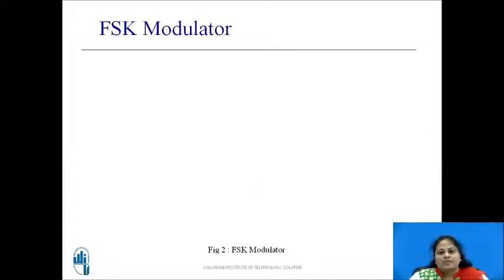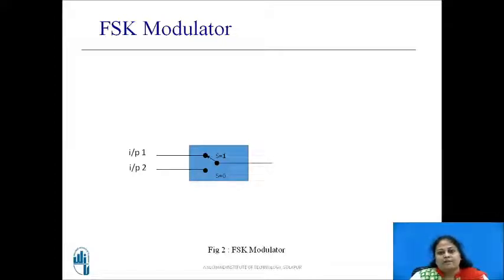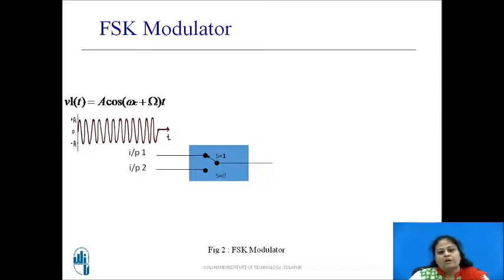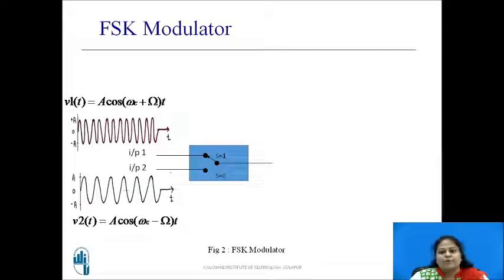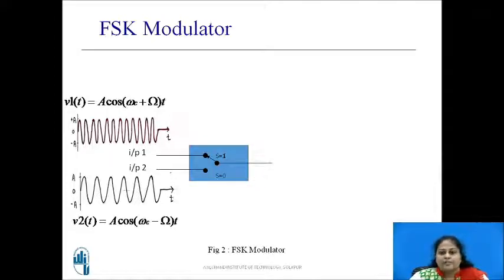Let us now see how the FSK signal is generated. A simple logic to generate a binary FSK signal is to use a 2-to-1 multiplexer. To one input of this multiplexer, a high frequency sinusoidal signal is applied, say V1(t) = A·cos(ωc + Ω)t. And to the other input, a low frequency sinusoidal signal is applied, say V2(t) = A·cos(ωc − Ω)t. These two signals have the same amplitude and phase but differ only in frequency, and these two frequencies can be chosen with respect to some reference frequency, say ωc.